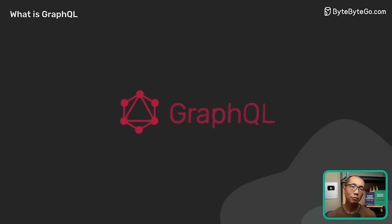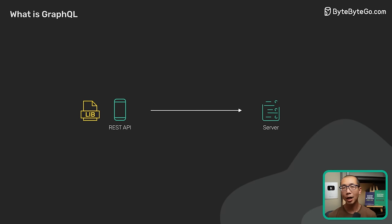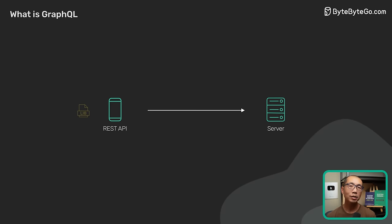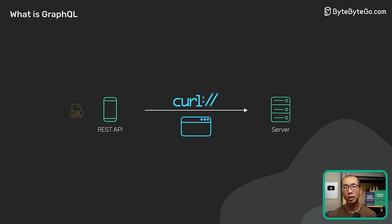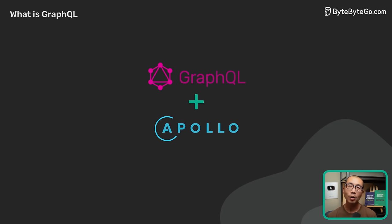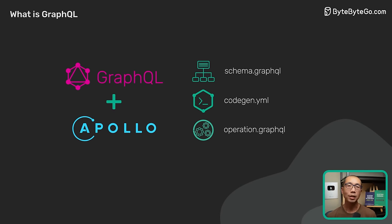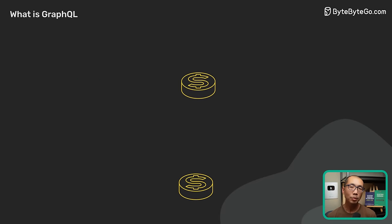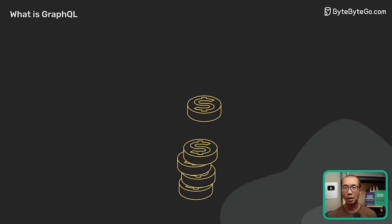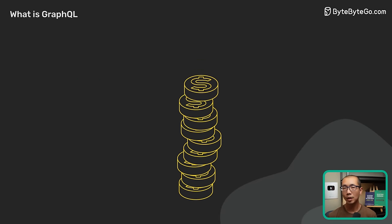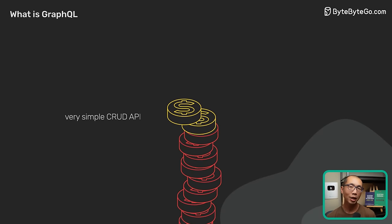Let's discuss some drawbacks of GraphQL. The beauty of REST is that we don't need special libraries to consume someone else's API — requests can simply be sent using common tools like curl or even a web browser. In contrast, GraphQL requires heavier tooling support on both the client and server side, requiring a sizable upfront investment. This cost might not be worth it, especially for very simple CRUD APIs.